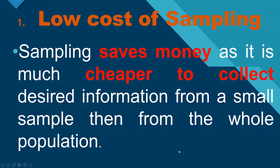Number 1: Low Cost of Sampling. Sampling saves money as it is much cheaper to collect desired information from a small sample than from the whole population. As you know, a sample is a small portion representative of the population. So when we deal with a small data set it saves our money.